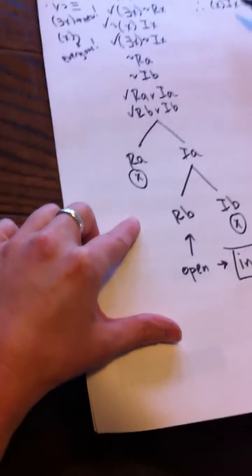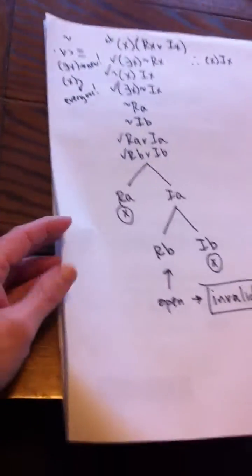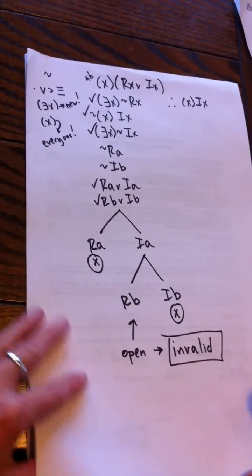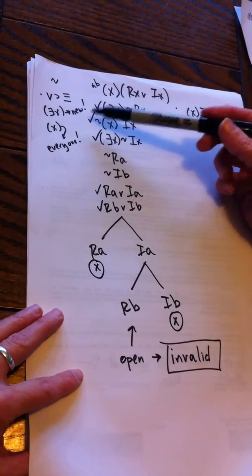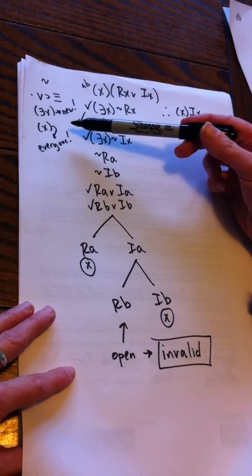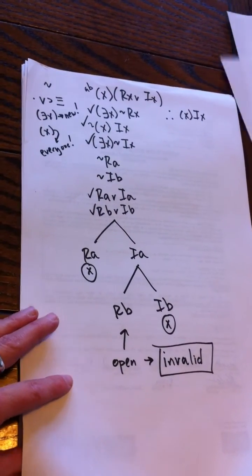Which is what we suspected just reading it off. All right, so there's that proof. Now I'm going to show you that same proof where I don't do the existential first and instead I do the universal first, and we'll compare them when I'm done.